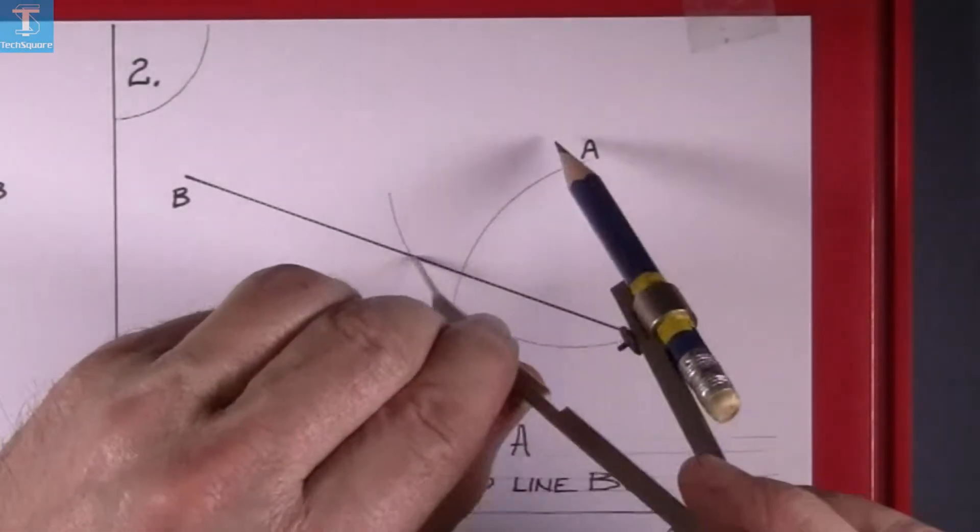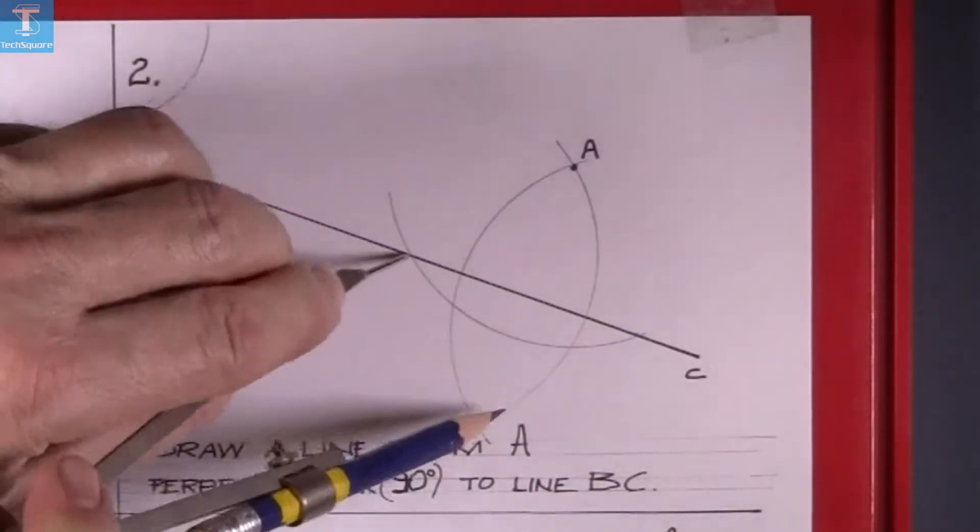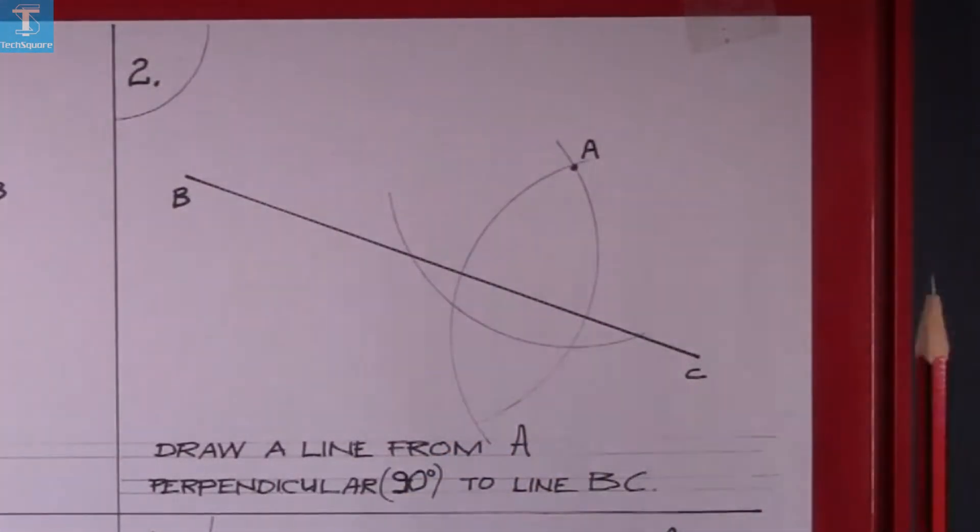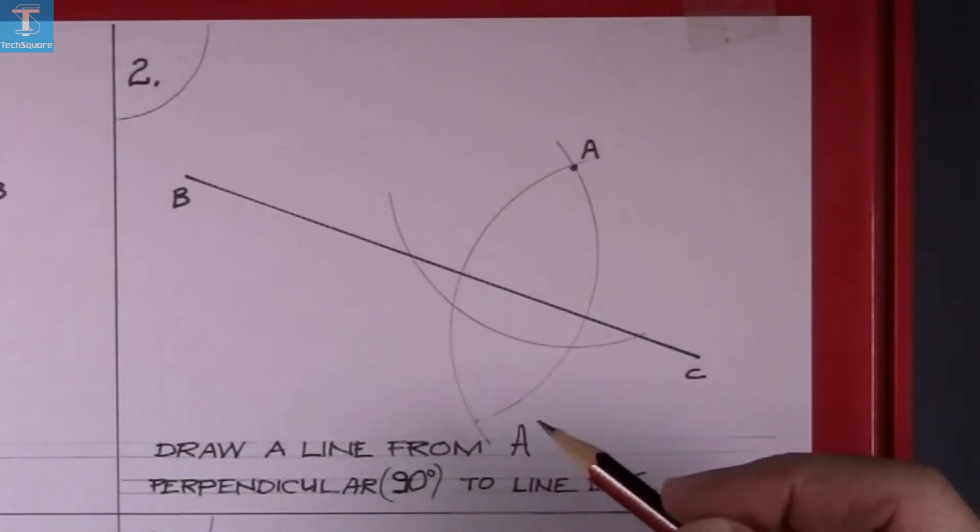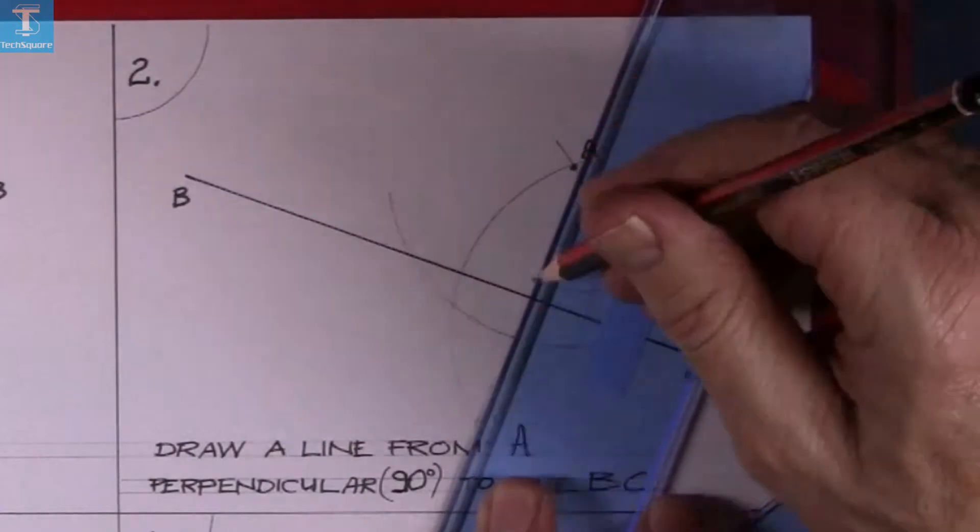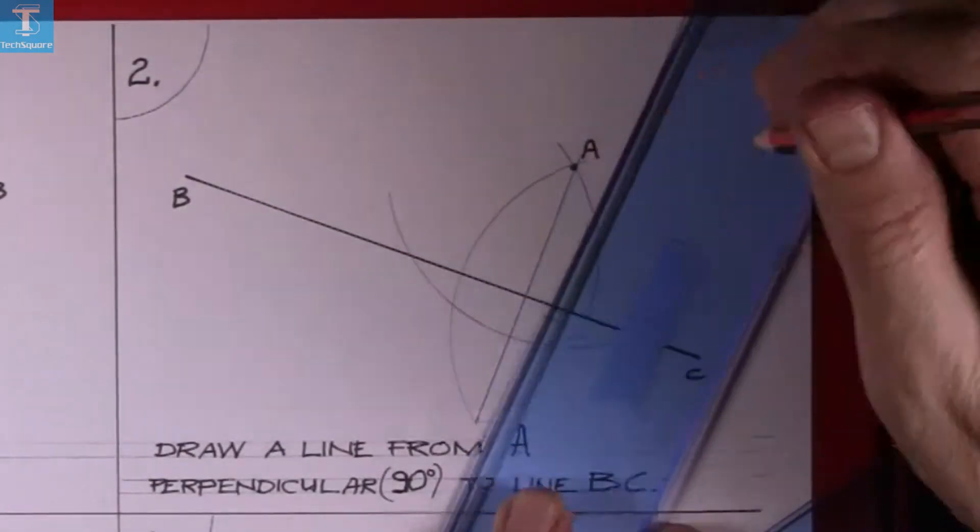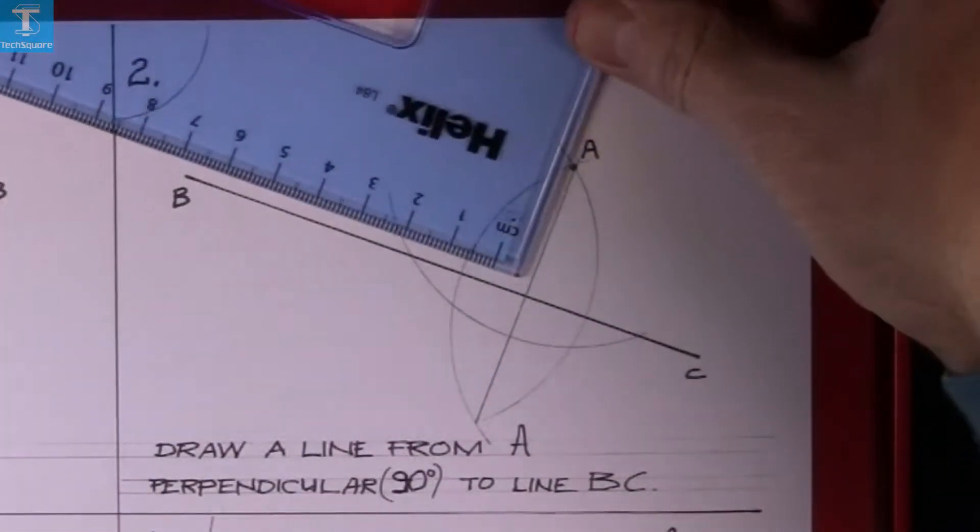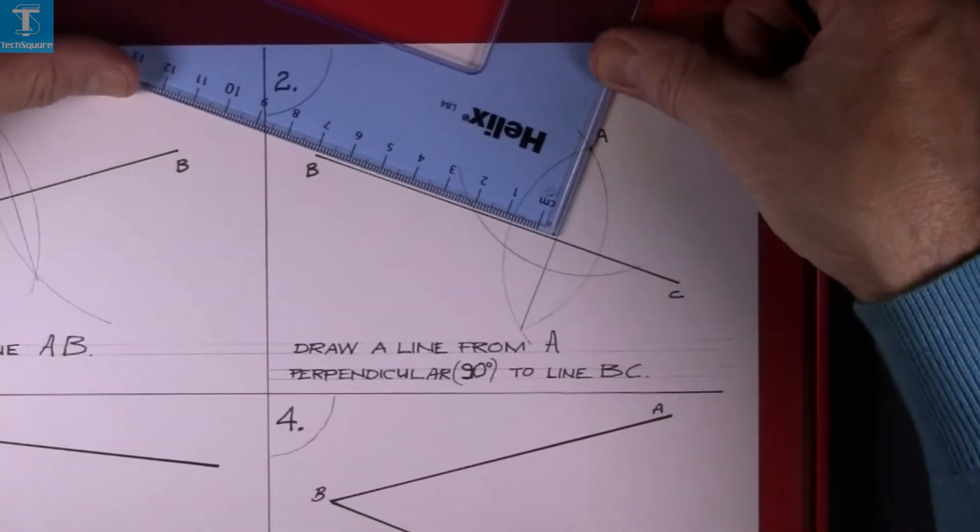And that gives you a point down at the bottom here, which when we join to A, that line will be perpendicular to the line BC. That's it shown there, 90 degrees.